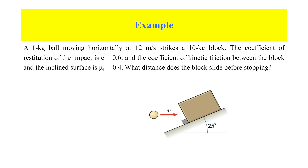First example: a one-kilogram ball moving horizontally at 12 meters per second strikes a 10-kilogram block. The coefficient of restitution of the impact is 0.6 and the coefficient of kinetic friction between the block and the incline surface is 0.4. What distance does the block slide before stopping?